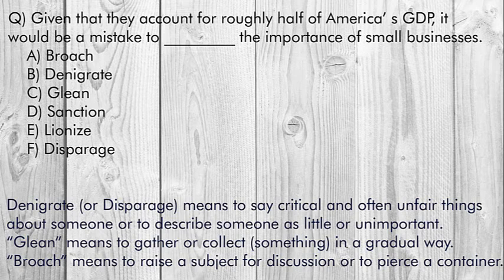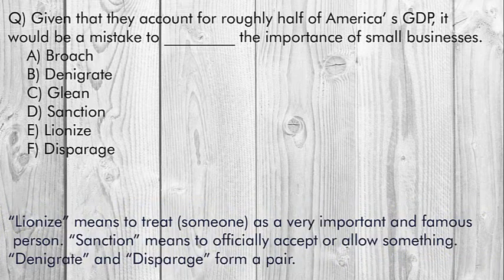Denigrate or disparage means to say critical and often unfair things about someone, or to describe someone as little or unimportant. Glean means to gather or collect something in a gradual way. Broach means to raise a subject for discussion or to pierce a container. Lionize means to treat someone as a very important and famous person. Sanction means to officially accept or allow something. Denigrate and disparage form a pair — here there is only one pair, so we are lucky.